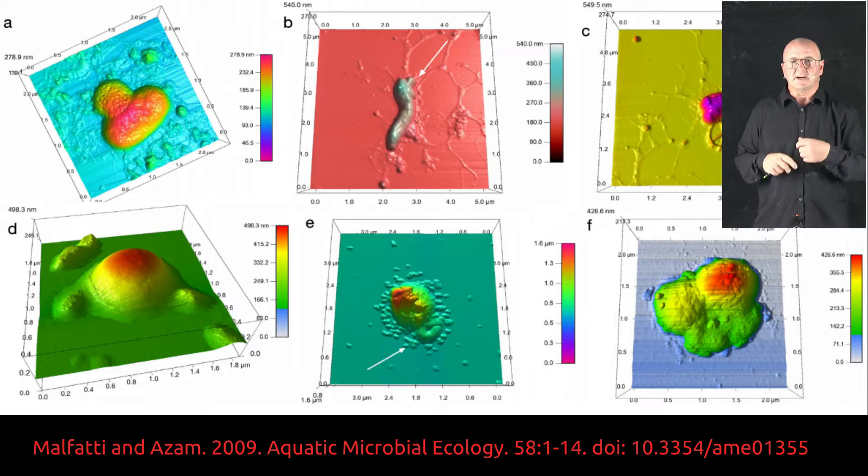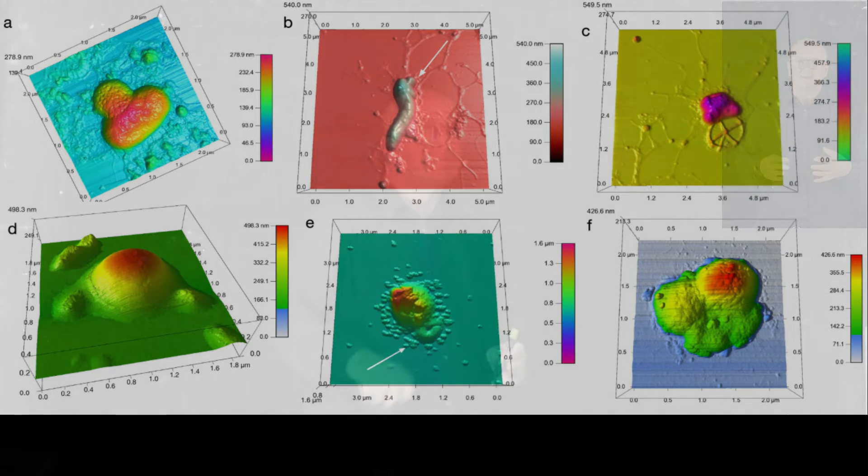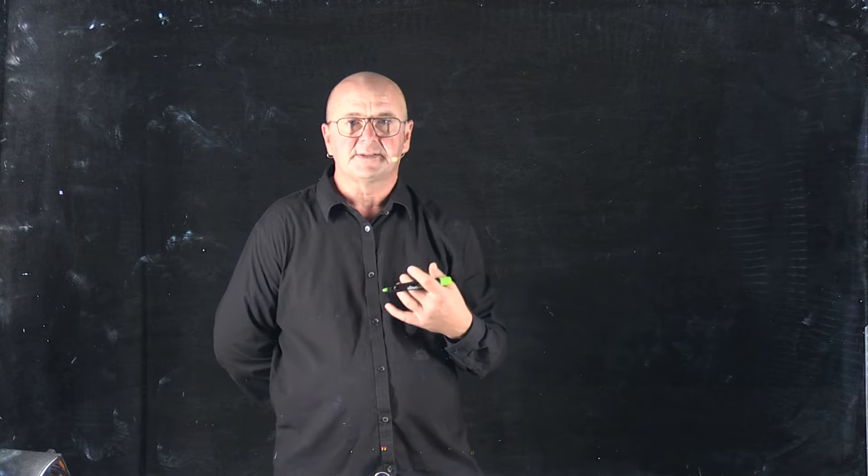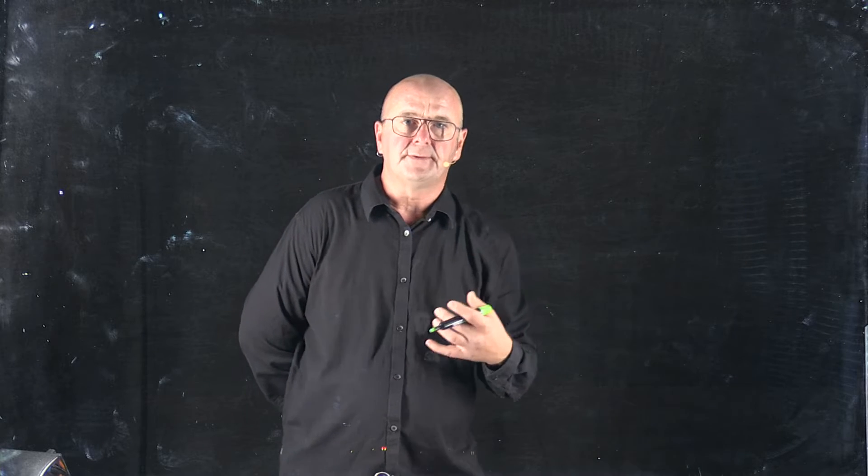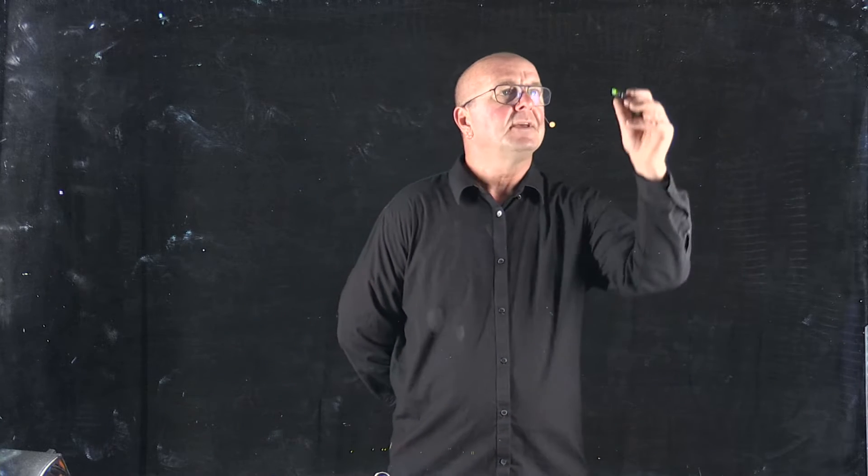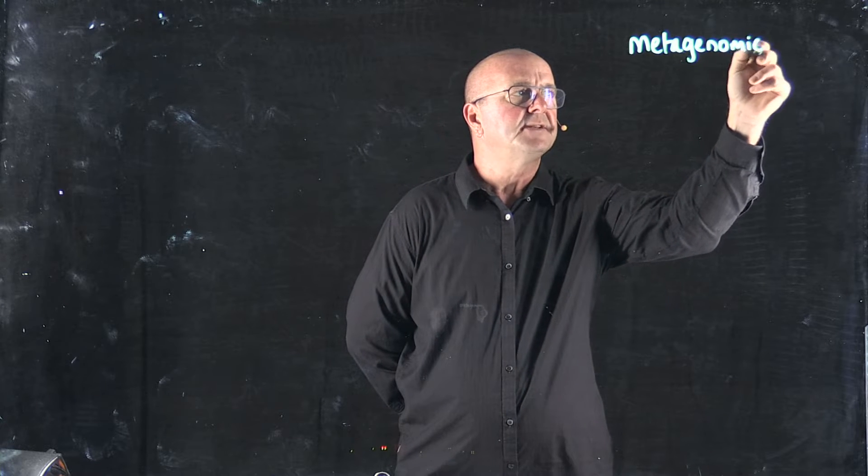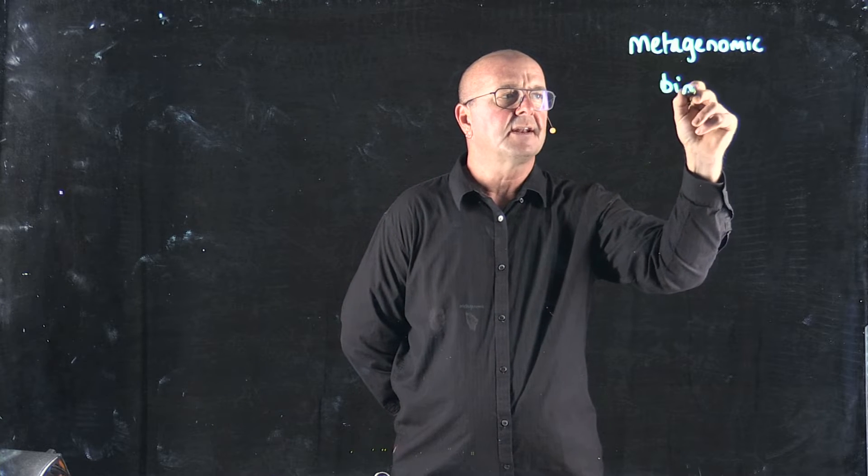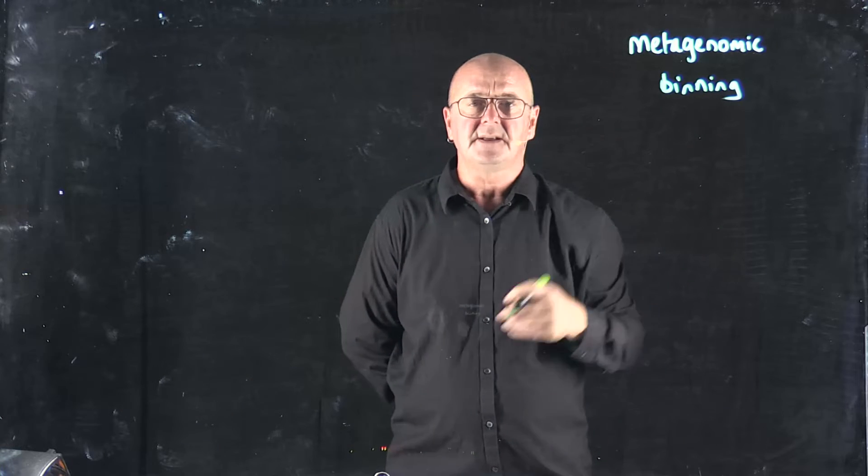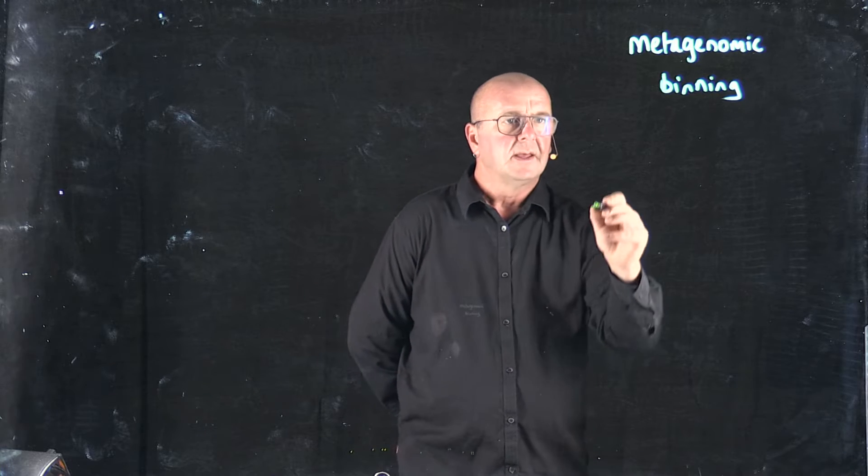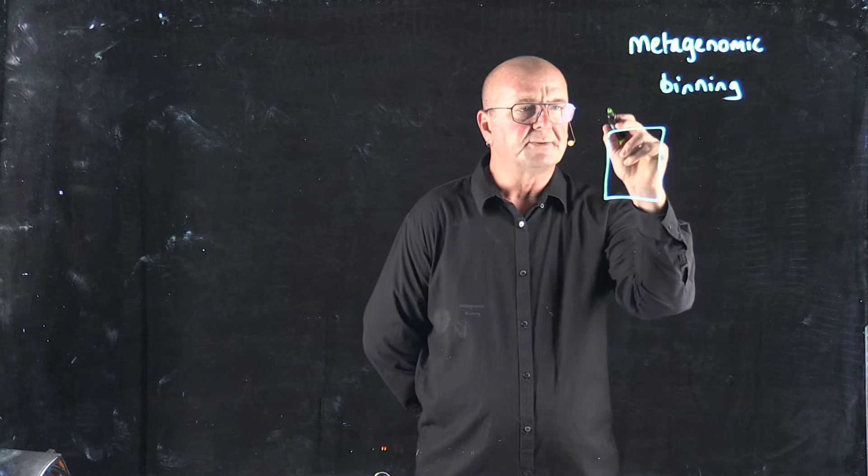This is something that we've run into time and again when we're isolating bacteria from the environment and then sequencing their genomes. Another common place where we often identify multiple genomes related to each other is when we do metagenomic binning. And so when we resolve our bins using something like differential coverage binning that I've discussed earlier, what we often find is multiple bins.